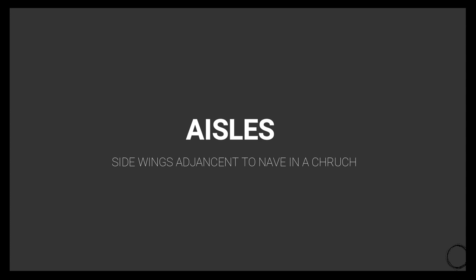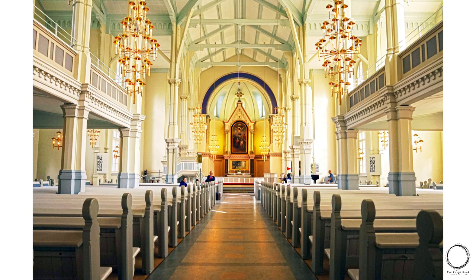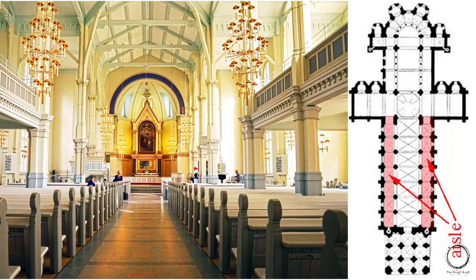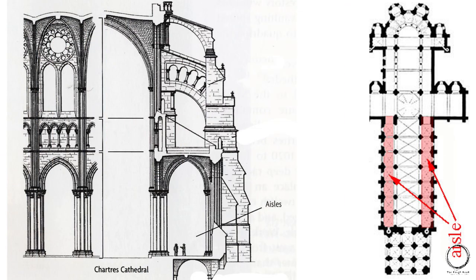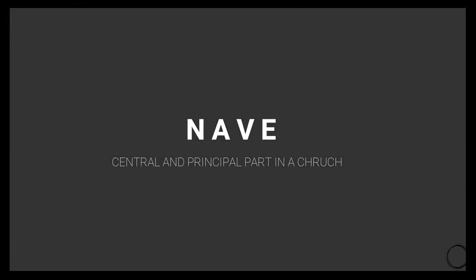To understand aisles, we have an interior image of a church showing the central part, and the highlight shows the aisles at both ends of the church — simply the outer corridor of the church. This is also marked in the plan above and in the section, showing the same.